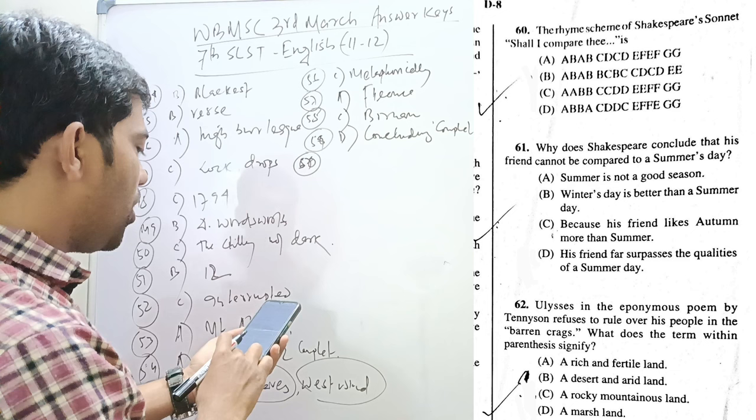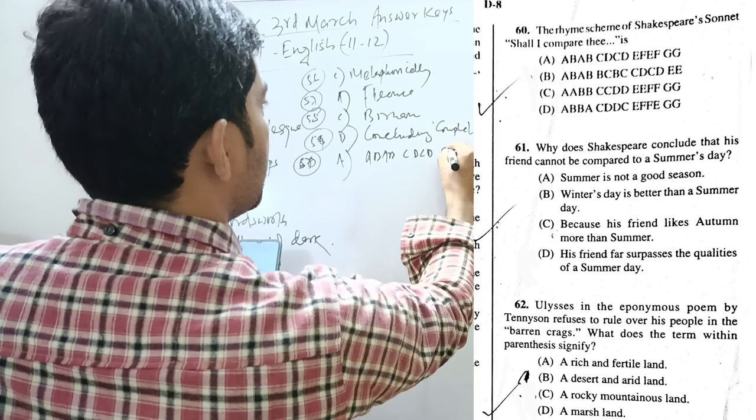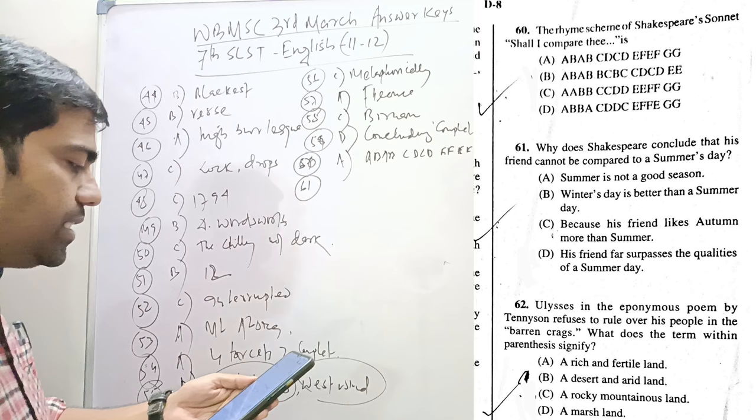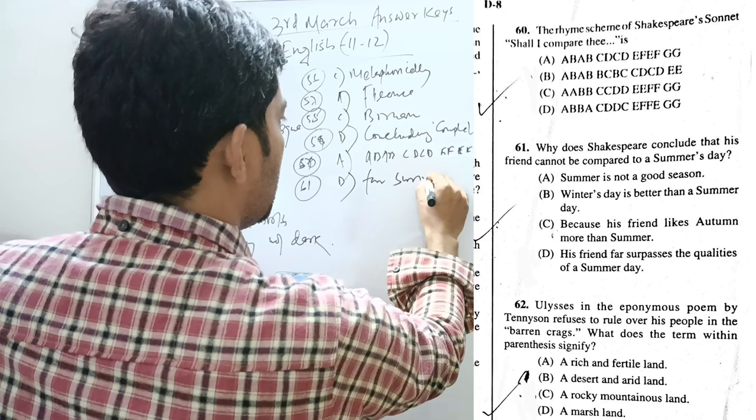Question 60. The rhyme scheme of Shakespeare's sonnet Shall I Compare Thee is very simple. ABAB CDCD EFEF GG.